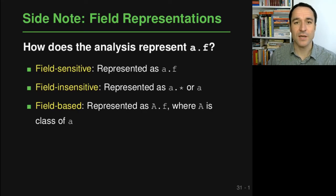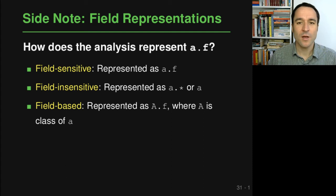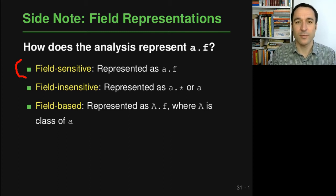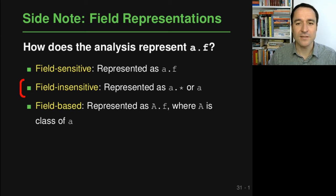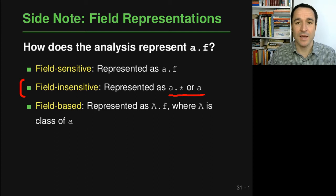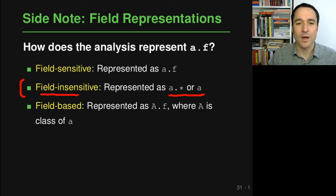A side note: an interesting question is how to represent fields. If you have a field of an object and want to reason about the types that field may have, there are different options. One option is field-sensitive: represent the field as specific to a particular object instance, so if variable a has field f accessed it's represented as a.f. This is the most precise but also most expensive approach. Another option is field-insensitive: collapse all fields of a class into one artificial field, which is more manageable but less precise.